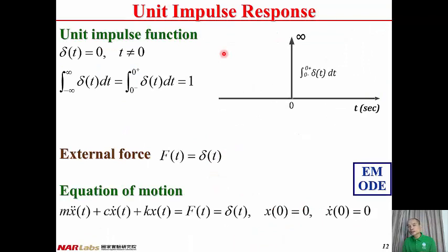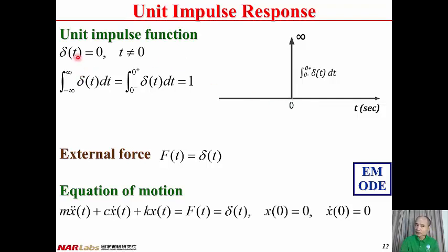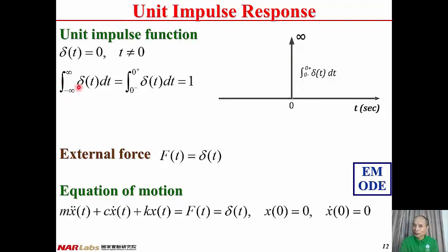Now we move to the unit impulse response. Before considering it, we consider the unit impulse function δ(t) first. When T is non-zero, δ(t) = 0. When T = 0, δ(t) tends to infinity. The area under this function, the integral from −∞ to ∞ of δ(t)dt, equals one — therefore it is called the unit impulse function.